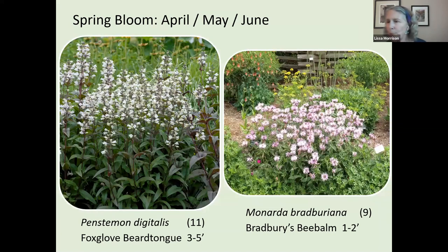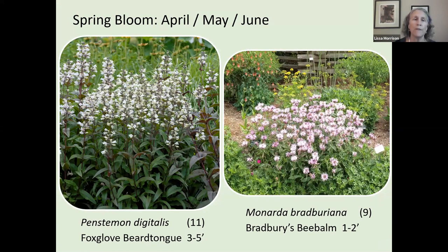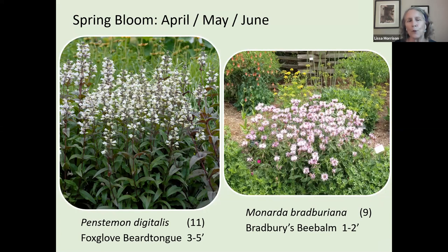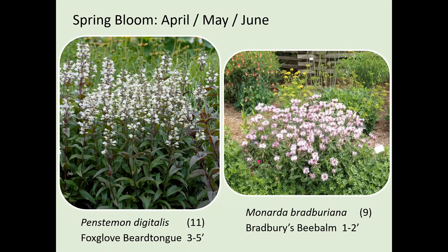Penstemon is another tubular flower — tough, comes back every year, and likes reasonable drainage, so avoid heavy wet soil. It likes sunshine. After they bloom, penstemons are not very attractive, so I recommend cutting them back to the basal leaves after blooming to keep the flower bed attractive.